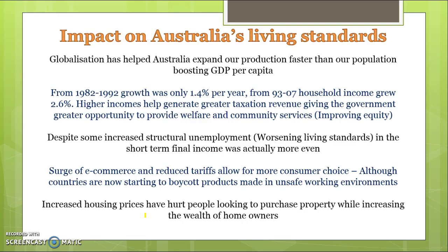Starting with the impact on Australia's living standards, globalization has helped to expand Australia's production faster than our population. Our total level of output is growing at a faster rate than our population, and therefore income per person — GDP per capita — is going up. From 1982 to 1992, population growth was around 1.4% per year, while incomes grew by around 2.6%. So that's had a massive impact on Australia's living standards.